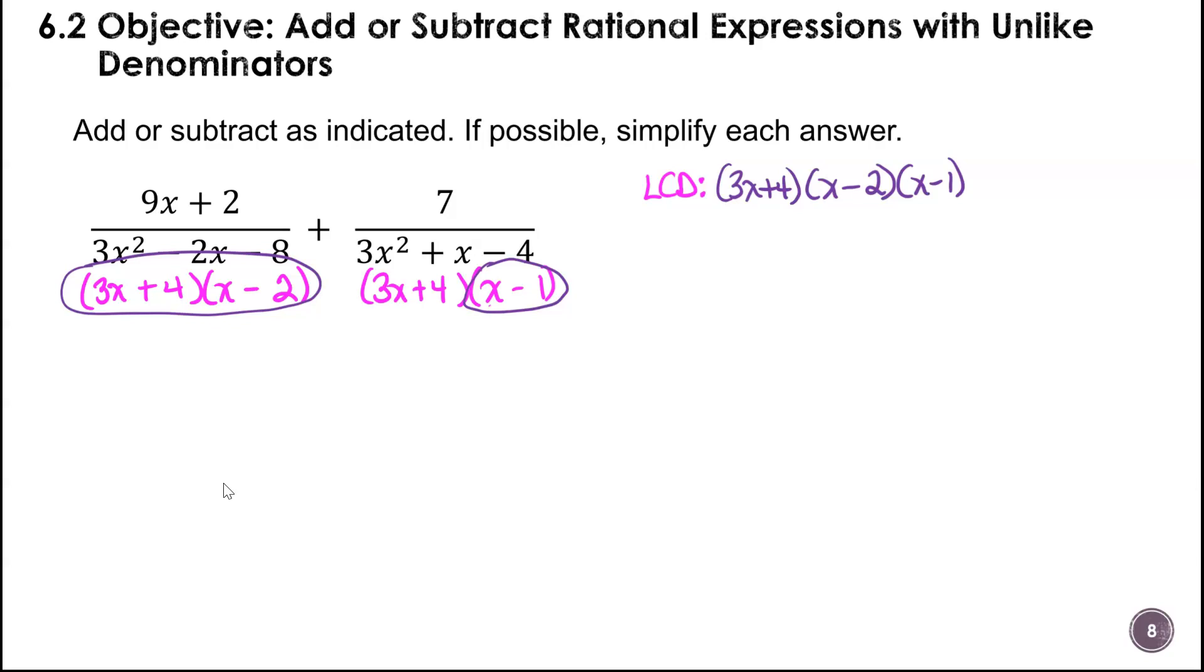Our LCD is going to be all of the binomials that appear. If I circle one of them and then look at the other one, you can see that we still also need this X minus 1. So 3X plus 4 times X minus 2 times X minus 1. I'll just put those in the order that they showed up here. So we want to rewrite. I would advise you not to try to scrimp too much on writing these out because it's easier to make mistakes that way.